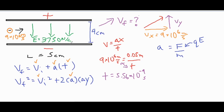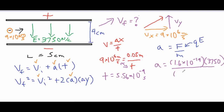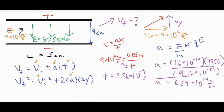We know E, the electric field that was given to us in the problem, and we also know the mass of the electron. Plugging in the values: q is 1.6 times 10 to the negative 19th coulombs, E is 3750 newtons per coulomb, and the mass of an electron is 9.11 times 10 to the negative 31st kilograms. Our acceleration comes out to be 6.59 times 10 to the 14th meters per second squared.